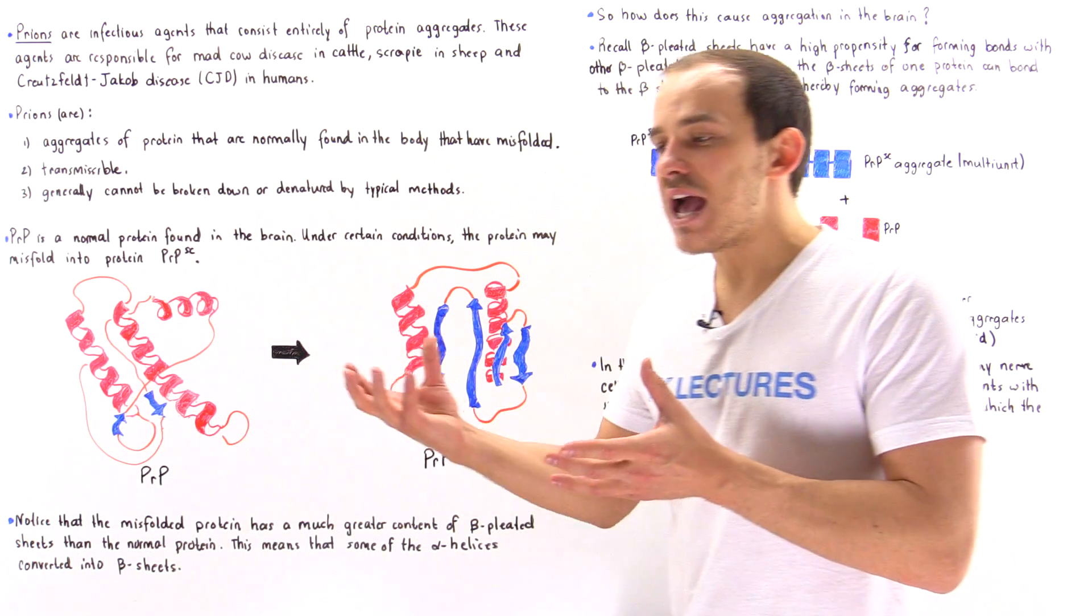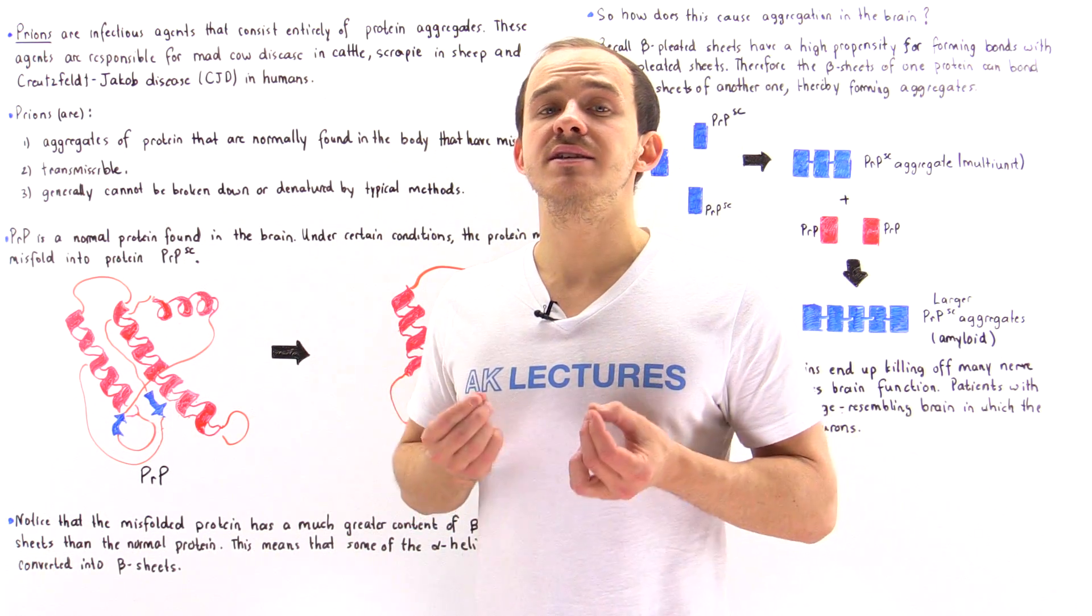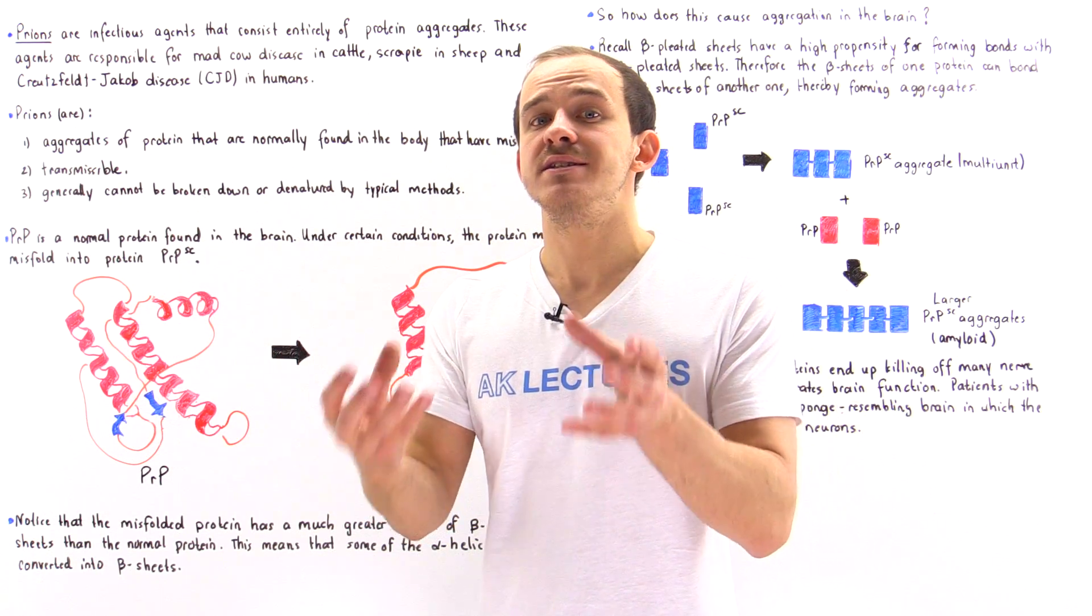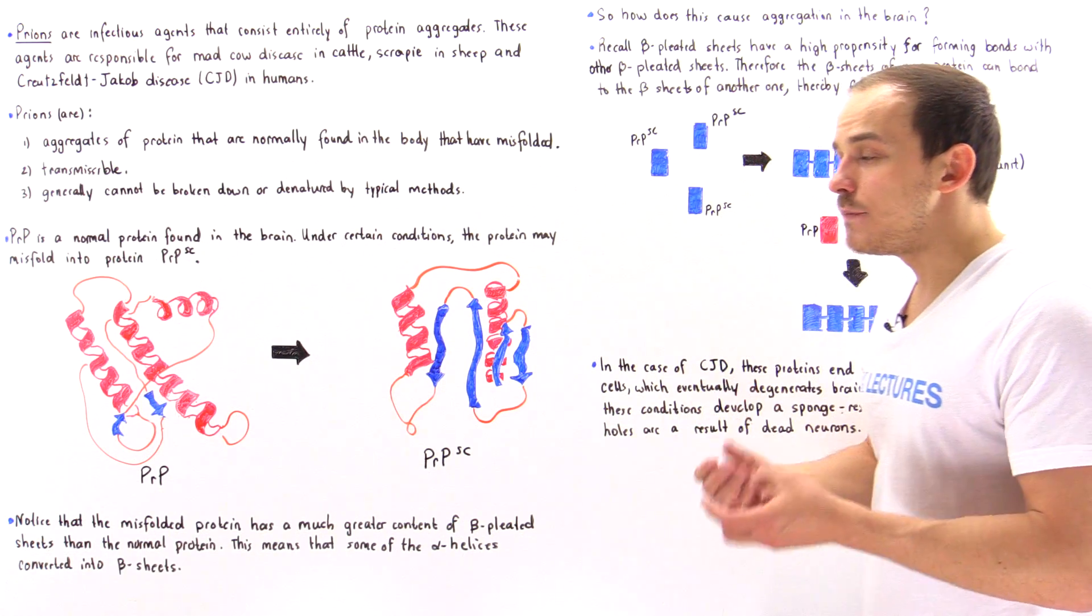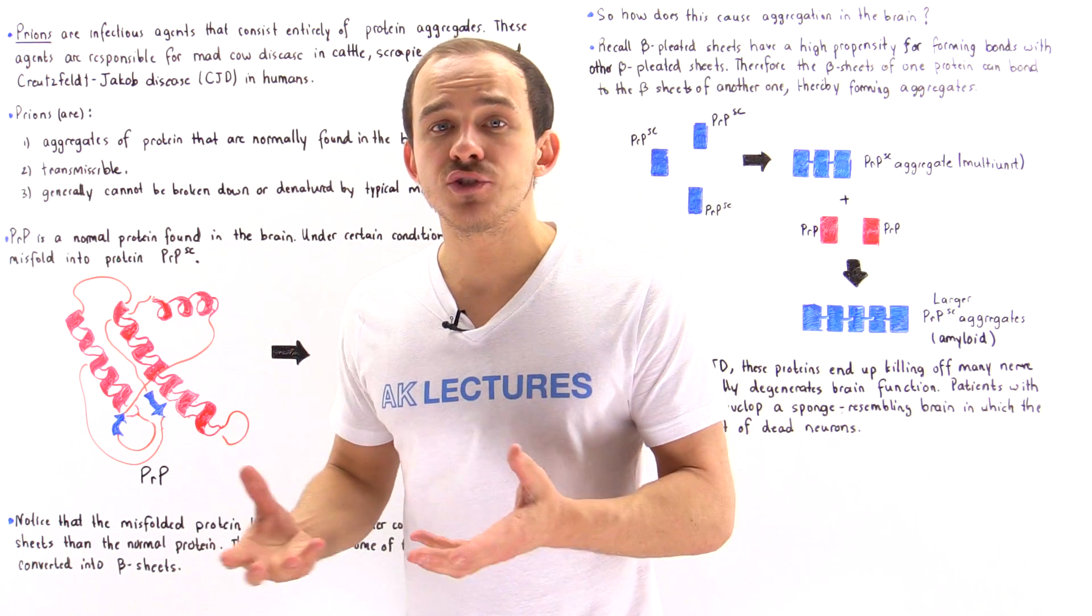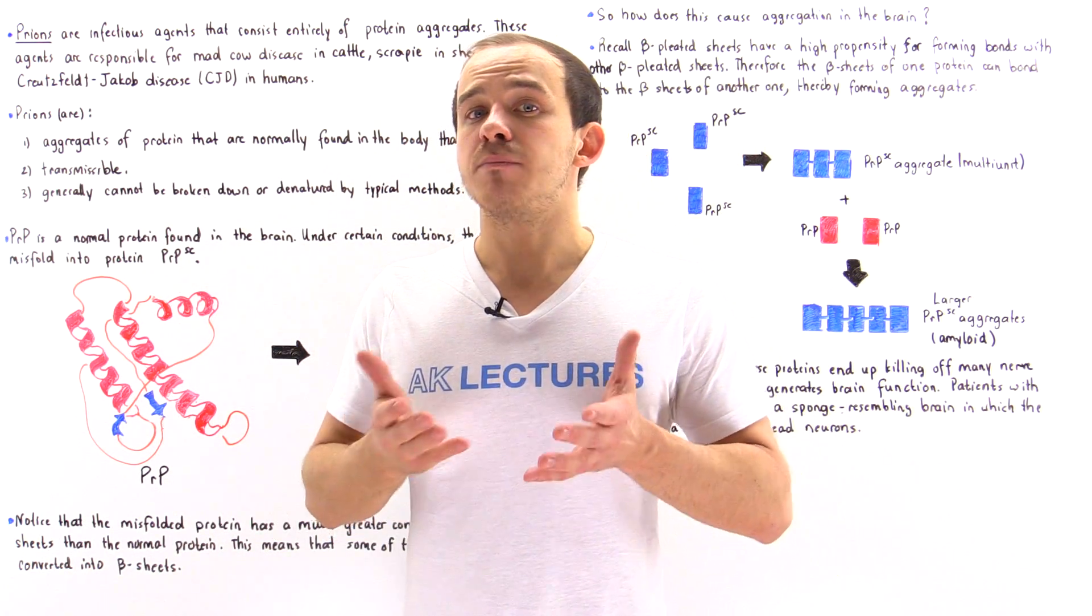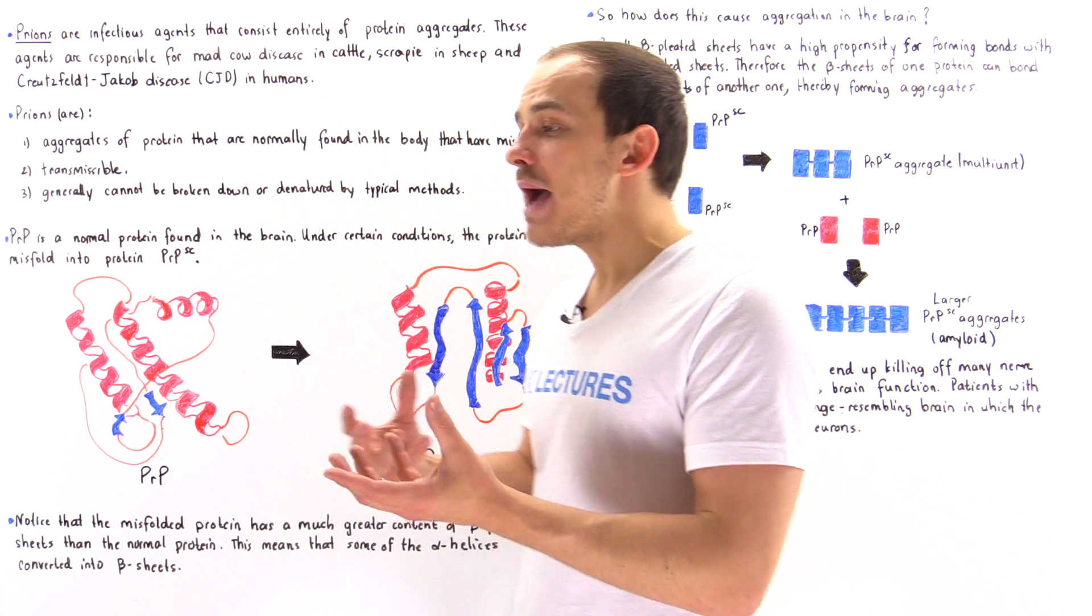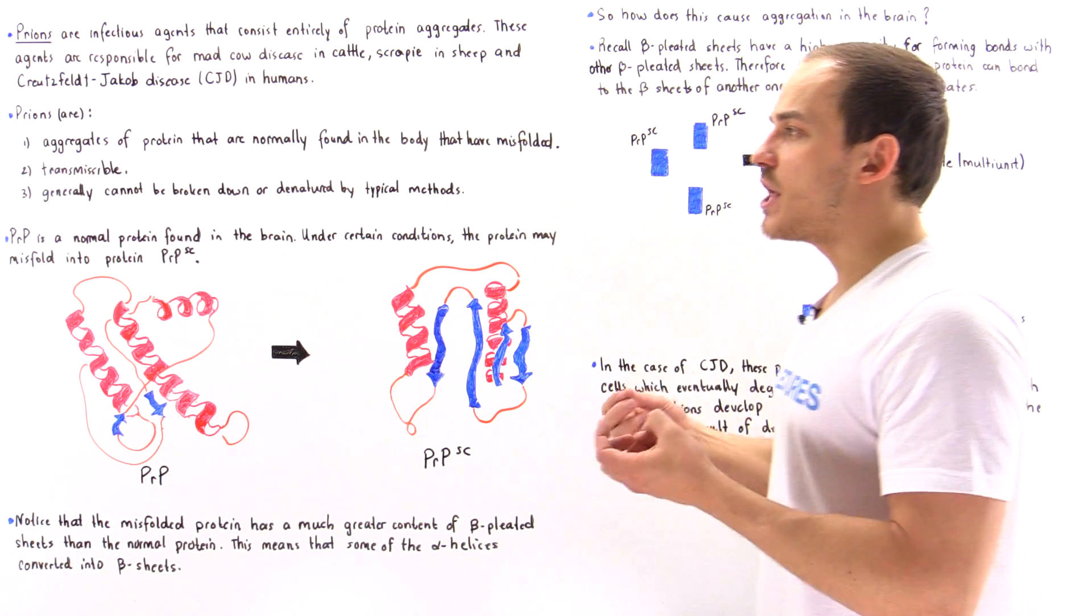Prions are aggregates, collections of proteins which normally exist in our body but which have misfolded. Because they misfolded, they form insoluble aggregates. Because they're insoluble, there is no way our cells can break them down and denature them by the same methods as they normally do. Because our cells cannot break them down, eventually the aggregate proteins will cause the death of the cell, killing off the cells of our body and eventually that individual.